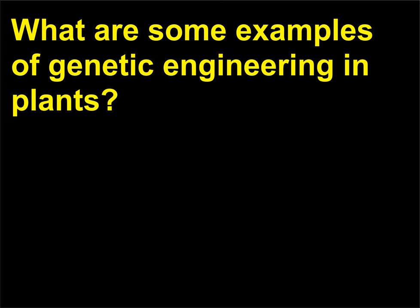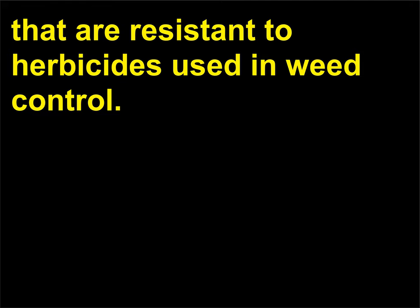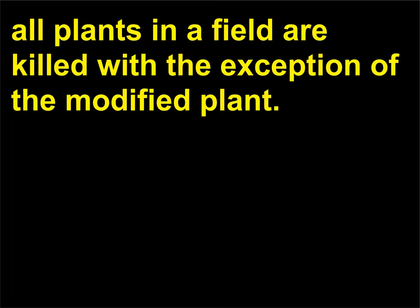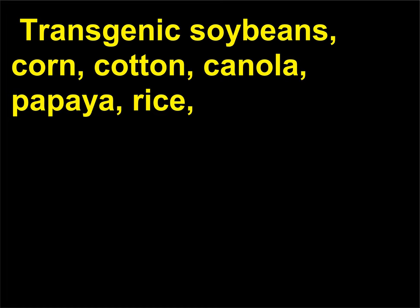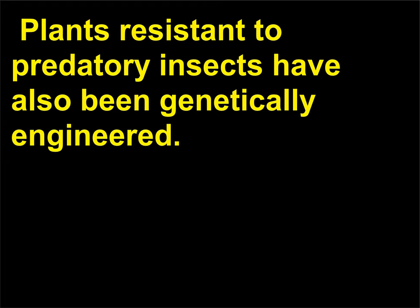What are some examples of genetic engineering in plants? Genetically engineered plants include transgenic crop plants that are resistant to herbicides used in weed control. These transgenic crops carry genes for resistance to herbicides such that all plants in a field are killed with the exception of the modified plant. Transgenic soybeans, corn, cotton, canola, papaya, rice, and tomatoes are used by many farmers in the United States. Plants resistant to predatory insects have also been genetically engineered.